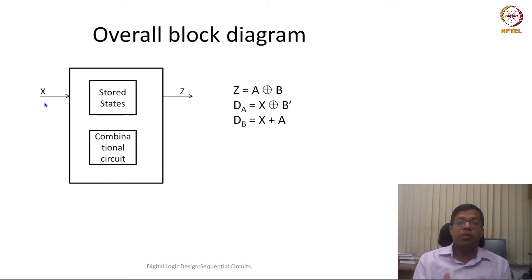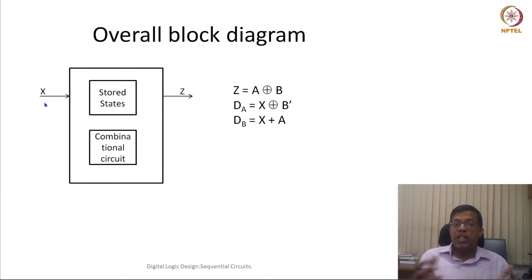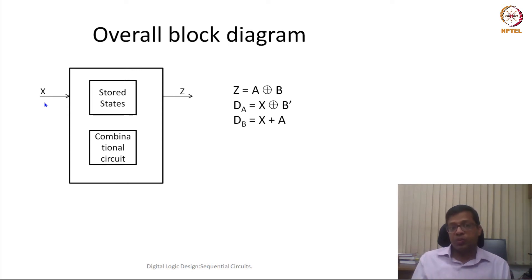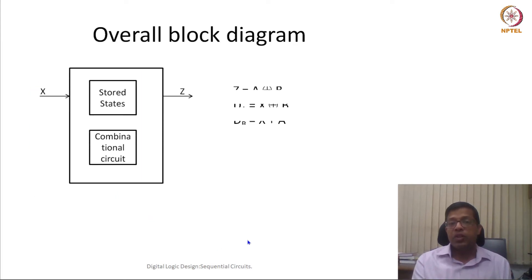Because of this combination, Z depends on the stored state and could also depend on X indirectly. That is why we said a sequential circuit's output does not depend solely on the current input — the current X modifies the stored state values, and the next state depends on the previous state as well as X. Overall, the sequential circuit depends on previous state values and the current X value. We have written: Z = A XOR B, DA = X XOR B_dash, DB = X + A.